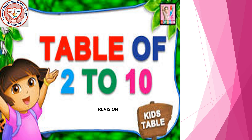6 tens are 60. Now tell me the table of 10 loudly: 10 ones are 10, 10 twos are 20, 10 threes are 30, 10 fours are 40, 10 fives are 50, 10 sixes are 60, 10 sevens are 70, 10 eights are 80, 10 nines are 90, and 10 tens are 100.